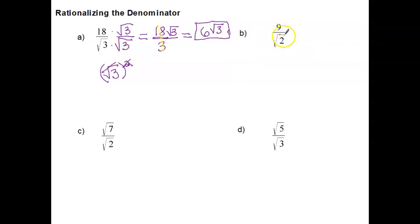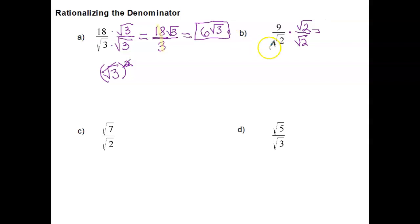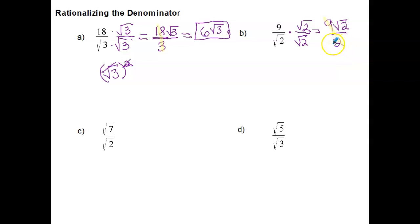Same thing for this next example. We have radical 2, the square root of 2, in the denominator — that's an irrational number, and we only want rational numbers in the denominator. So we multiply by the square root of 2 in both the numerator and the denominator. In the numerator we get 9 radical 2. In the denominator, radical 2 times radical 2 gives us just 2. We check whether 9 and 2 can be simplified, but 9 divided by 2 gives a decimal, not a whole number, so we leave it. Our answer is 9 square root of 2 over 2.